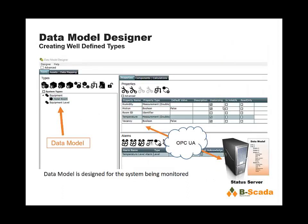So how do we create a model? We have a piece of software called a Model Designer, and creating a model is actually fairly simple. In this example, we would come in and say we want to create a new type — it would be a hotel room. Then we would add some properties to that type: a temperature, a room ID, humidity. We can also add alarms, calculations, and set up whether we would like the data to go into the historian, and if the values are read-only or can be written to.